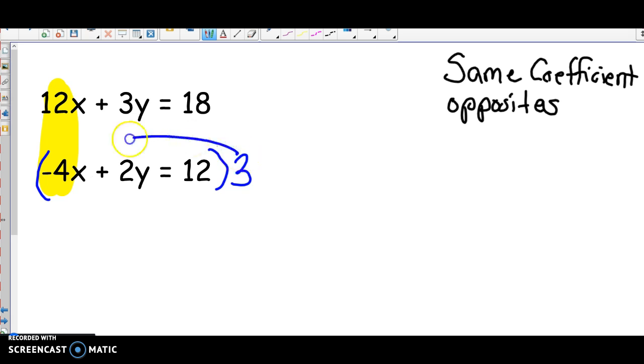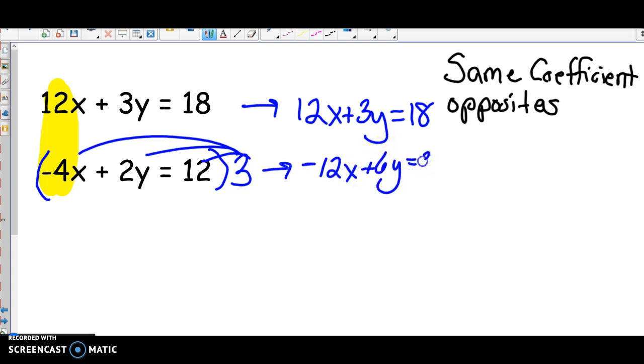So if I multiply this whole thing by 3, that will make my x coefficient negative 12. Remember, you have to multiply everything by negative 3. Take the time to rewrite it. That I just rewrote, this one I'm going to multiply everything by 3. So I get negative 12x plus 6y equals 36. And you're going to combine them. So 12x minus 12x cancels, 3y plus 6y is 9y, and 18 plus 36 is 54.